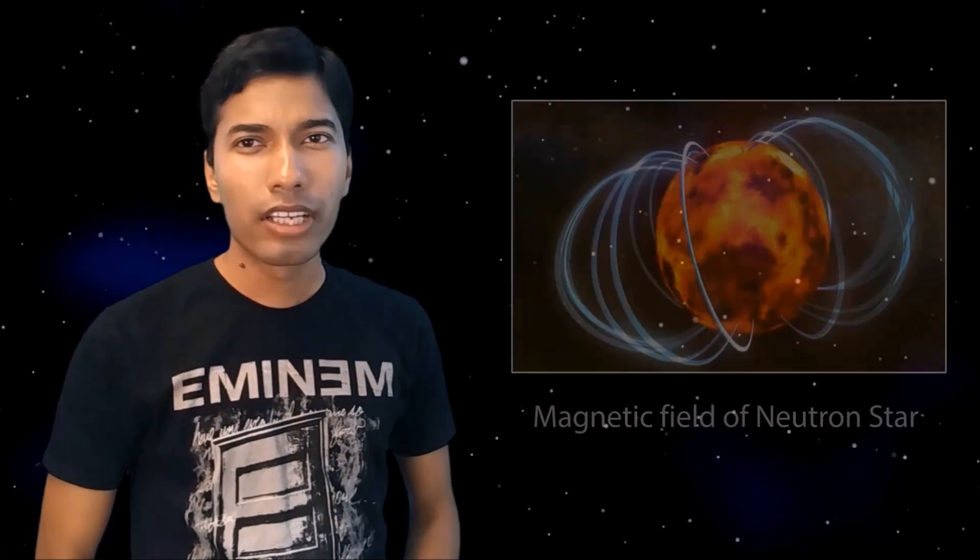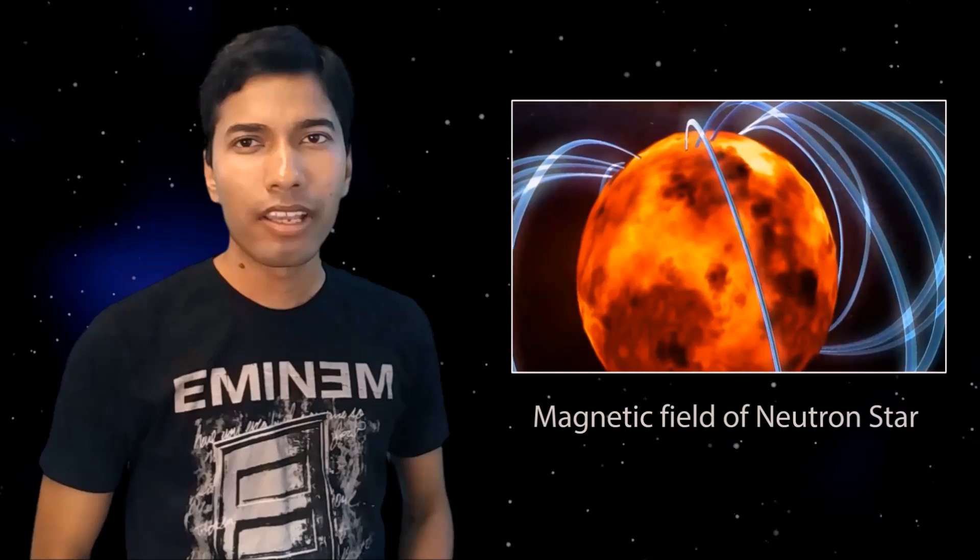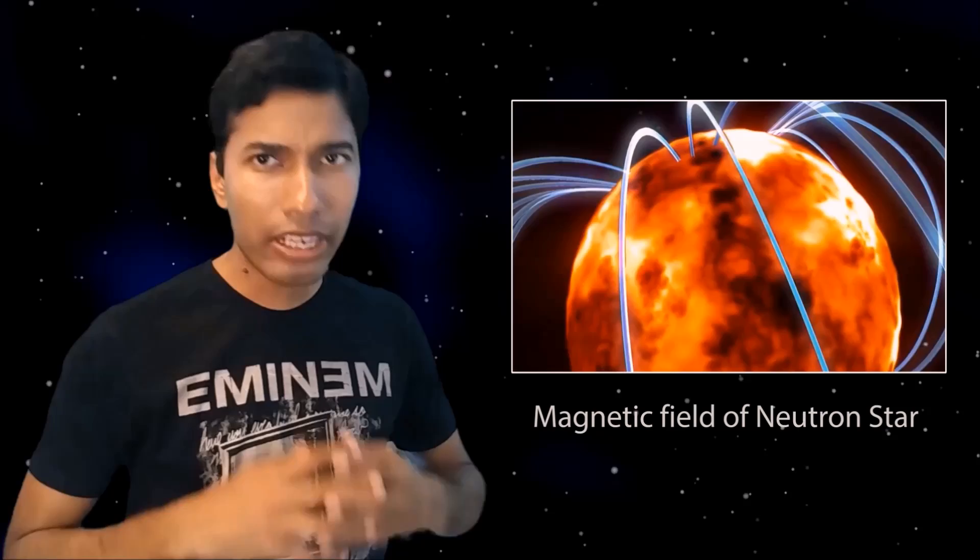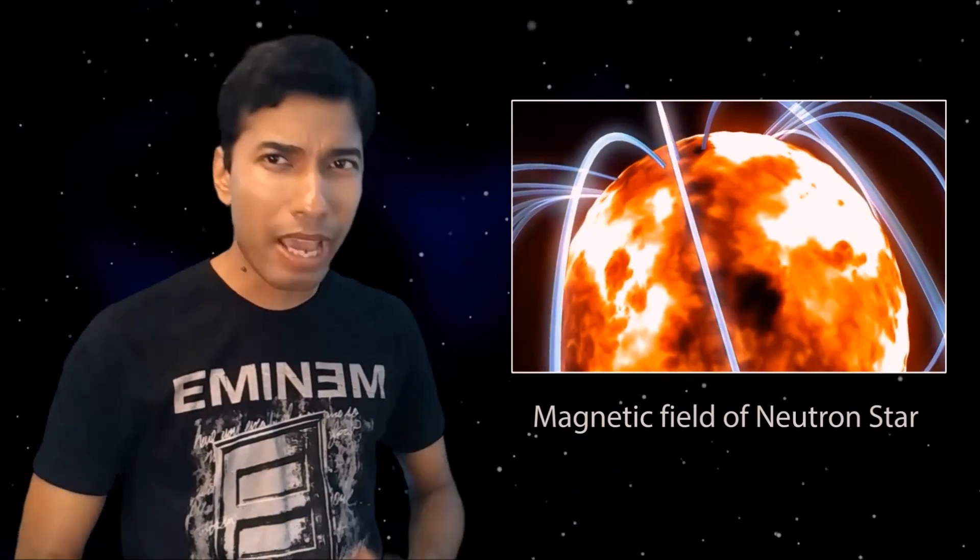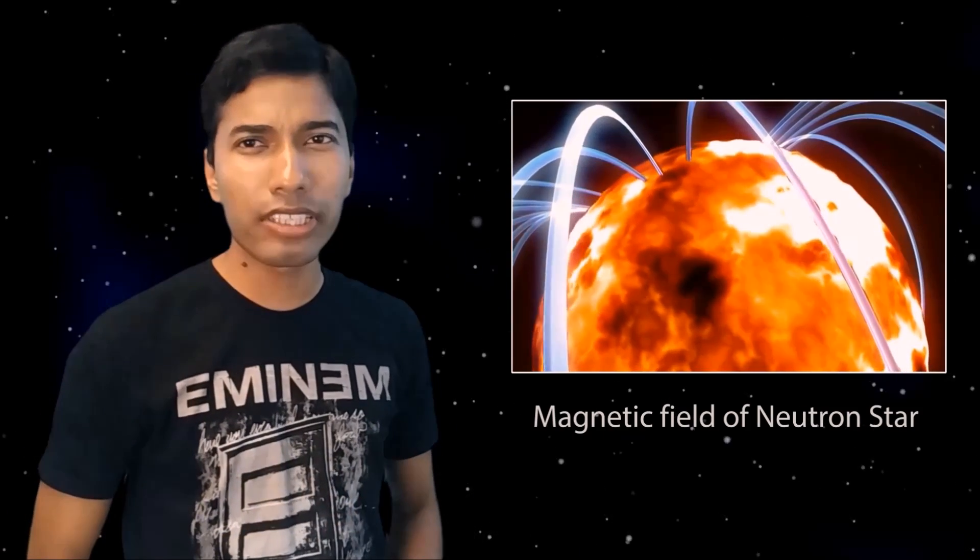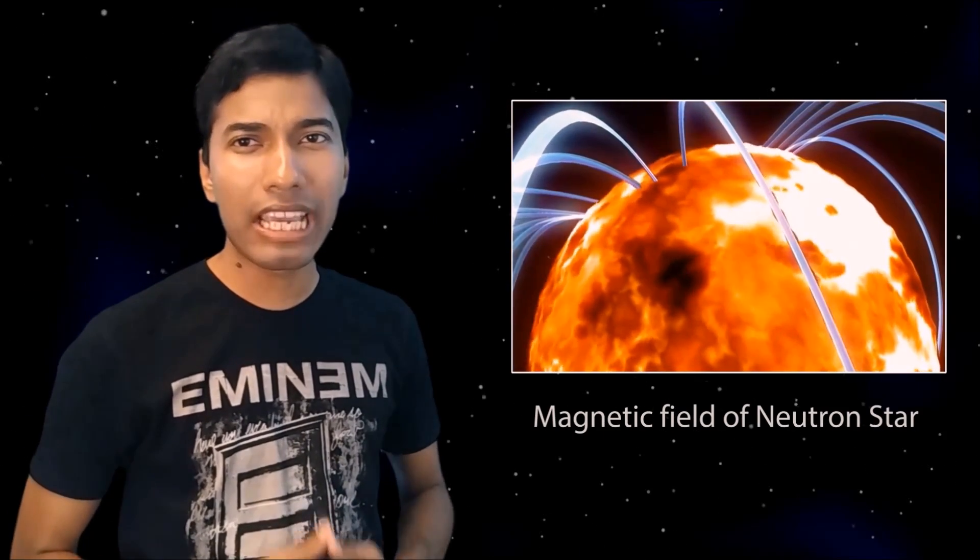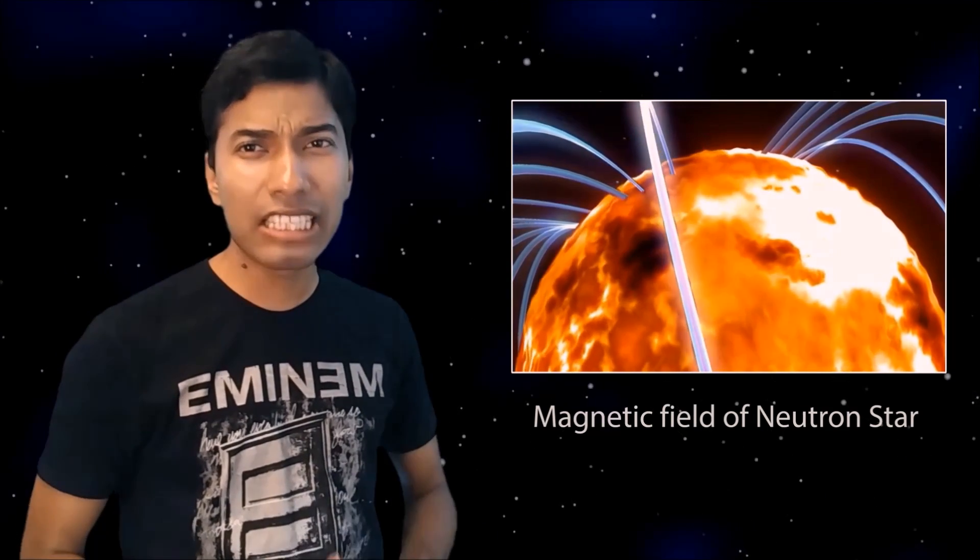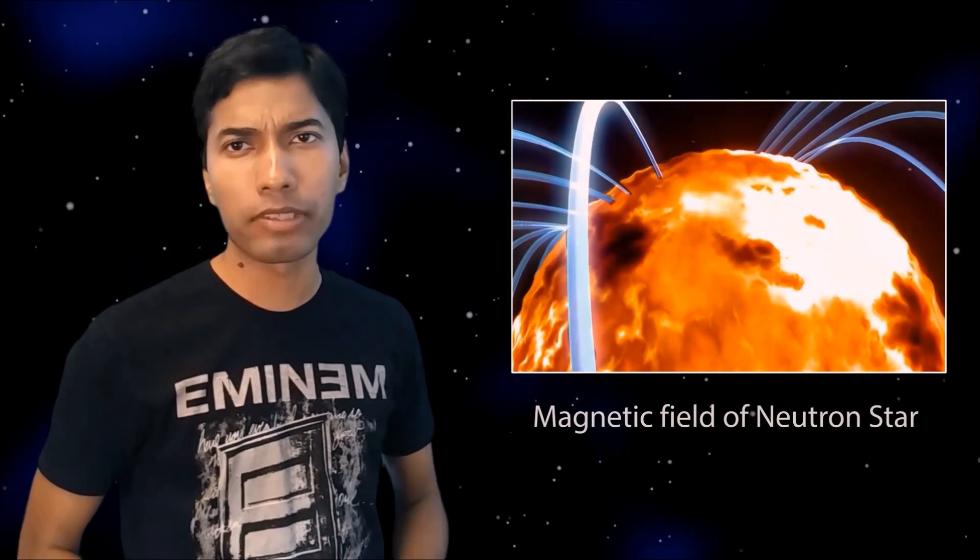When the core of a star collapses into a neutron star, the angular momentum is conserved. As the radius of a neutron star is very very small, they rotate really fast. The rotational period of a neutron star can vary between few milliseconds to few seconds long. This extremely fast rotation speed gives rise to an extremely strong magnetic field. The magnetic field of a neutron star can easily be a trillion times stronger than that of the sun's.